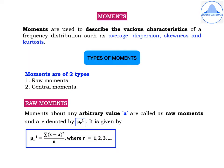Moments are used to describe the various characteristics of a frequency distribution such as average, dispersion, skewness and kurtosis. There are two types of moments: raw moments and central moments.